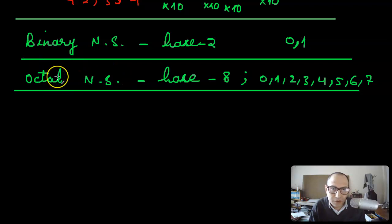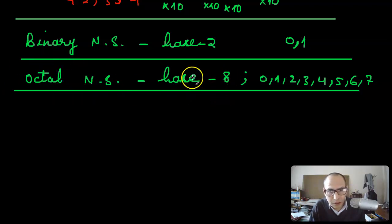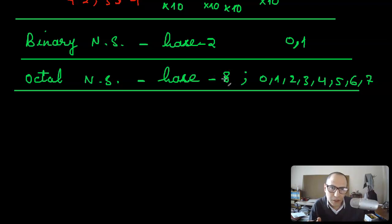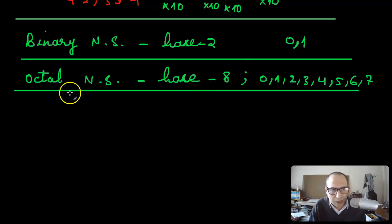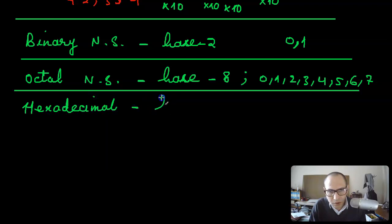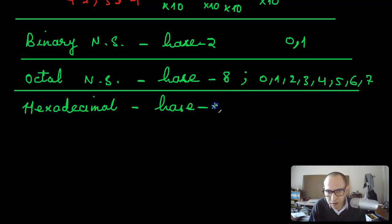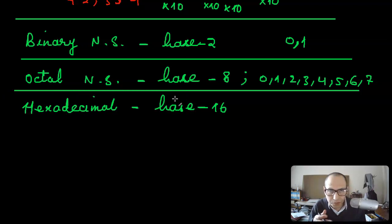The octal number system is more used in computer software than in circuitry, because building a computer circuit based on base 8 would be unnecessarily complicated. The base 8 number system is used in the software part of a computer for representing larger numbers. There is also the hexadecimal number system, which is the base 16 number system. This is also used in computing, in the software part, for representing large numbers.